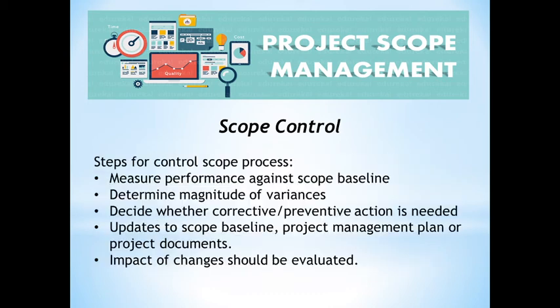The steps for the control scope process are: first, measure the performance against the scope baseline; second, determine the magnitude of variances; third, decide whether corrective or preventive action is needed; fourth, update the scope baseline, project management plan, or project documents; and fifth, evaluate the impact of any changes.